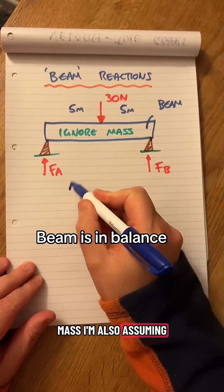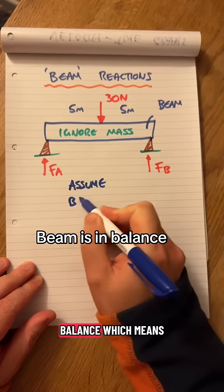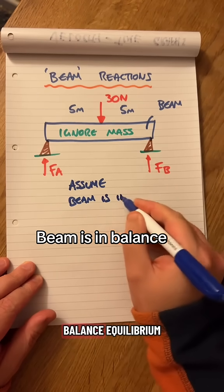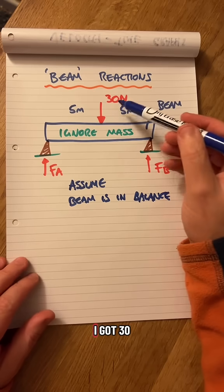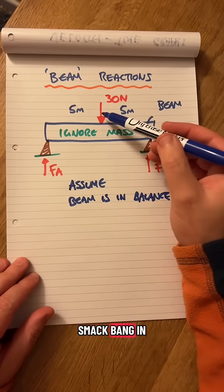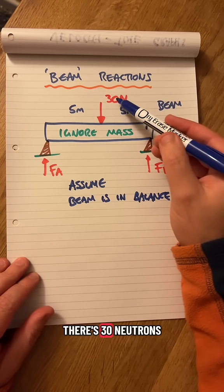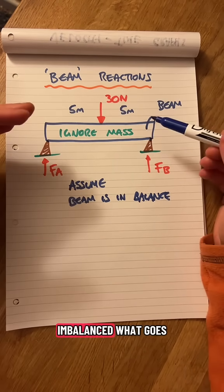I'm also assuming the beam is in balance, which means it's not moving. Beam is in equilibrium. I've got 30 newtons coming down, smack bang in the middle of the beam. There's 30 newtons there. This beam is in balance.